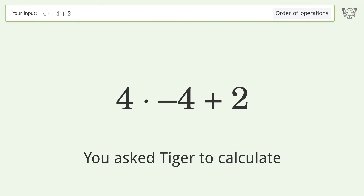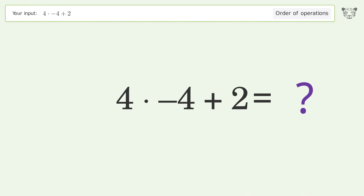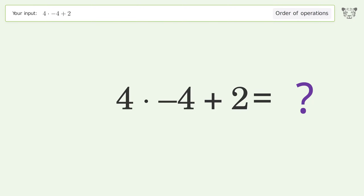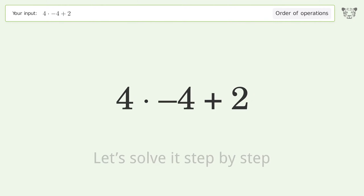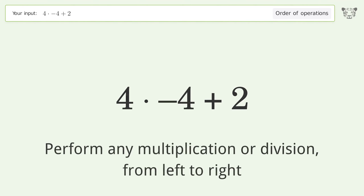You asked Tiger to calculate this. It deals with the order of operations. The final result is negative 14. Let's solve it step by step.